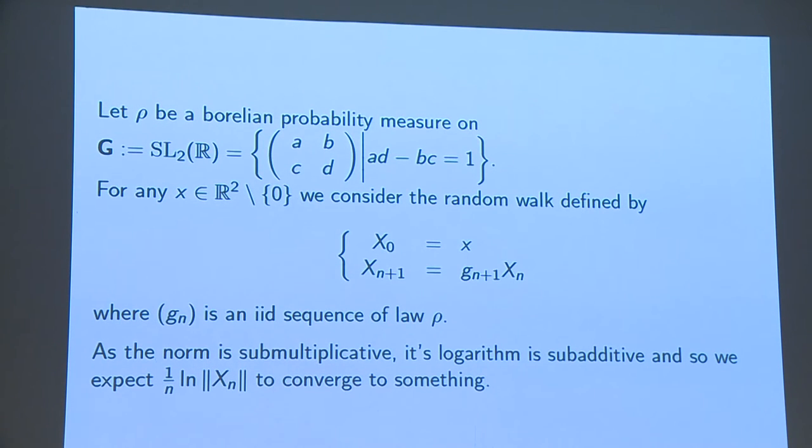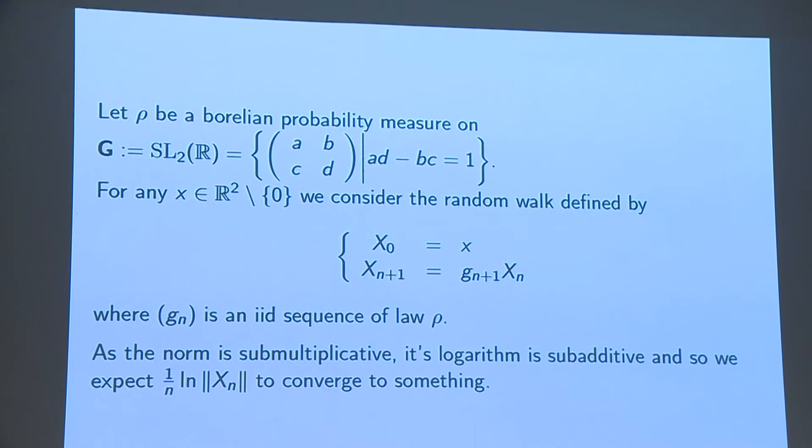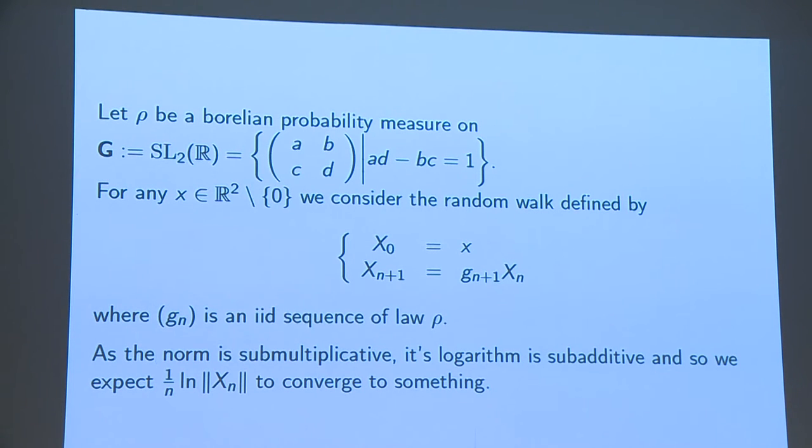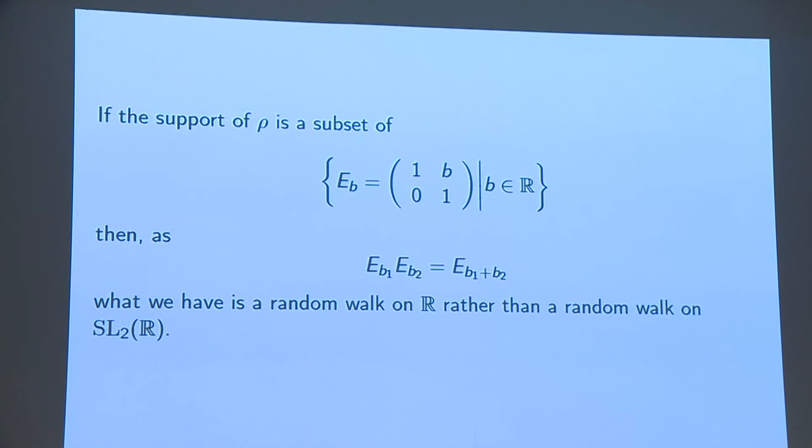And as the norm is sub-multiplicative, I expect the logarithm of the norm to be sub-additive and so if I normalize by n, by 1 over n, I expect it to converge to something. But to do so, I have to take care about some things.